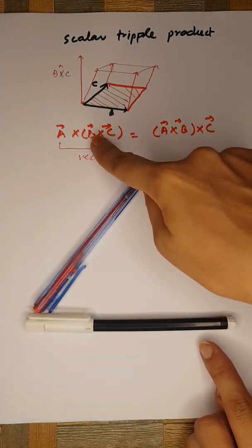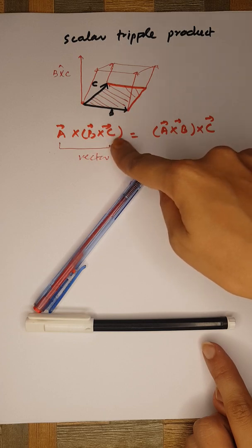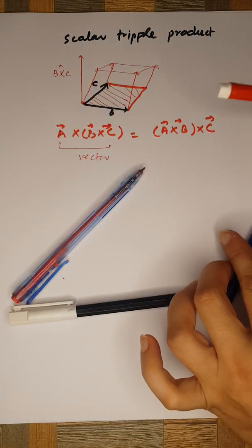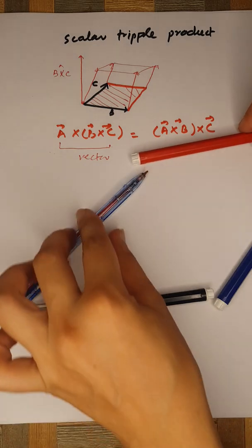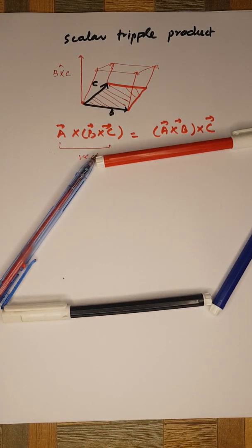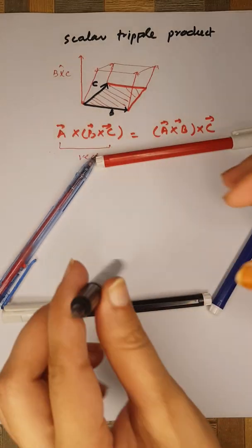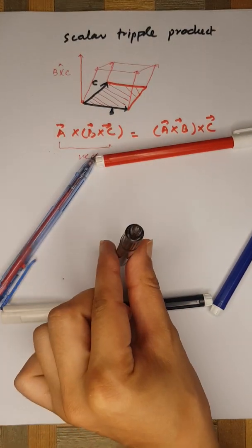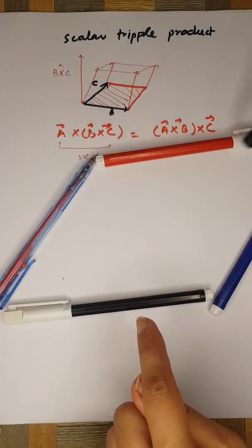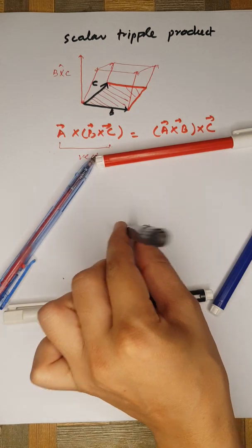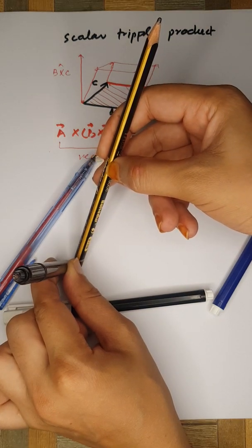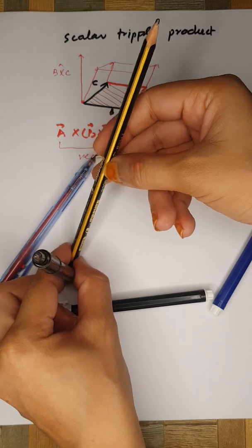Since we are supposed to perform the cross product of b and c first, let's say here is the plane formed by b and c. The resultant is actually perpendicular to this plane — that is the cross product of vector b and vector c, and this is the plane formed with these markers. This is the resultant vector of b and c. Now let's say your vector a is lying something like that, and now the plane that is being formed is this side.